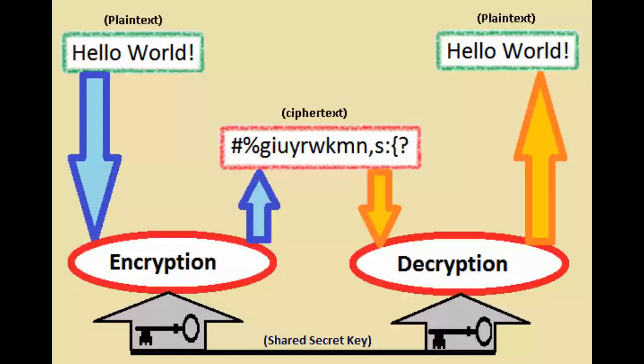The purpose of encryption is to secure information by converting it into a ciphertext that is undiscernible without a key to decipher it. This prevents unauthorized access to information by requiring the key to decrypt the ciphertext into discernible information. Encryption is a security mechanism that protects against physical attempts to access the information. However, encryption only provides security against physical attacks.